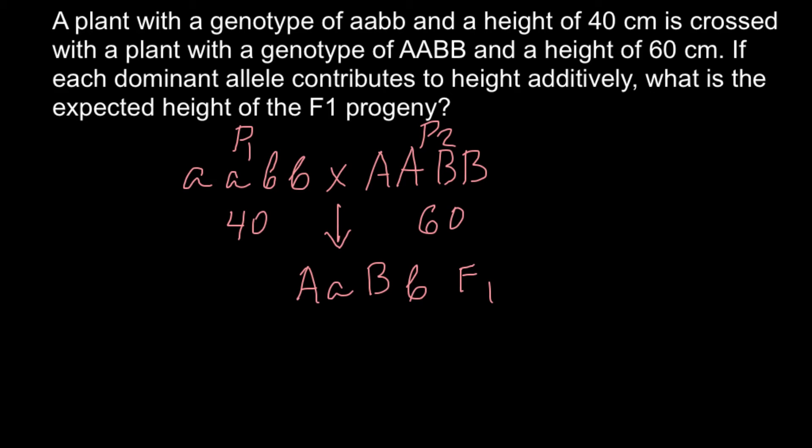Now it's very easy to calculate how much each allele, whether it is dominant or recessive, adds to that trait. For example, parent 1 has 4 alleles and height is 40 cm, so we can say that each allele would add 10 cm. We just divide 40 cm by 4 alleles and we get 10 cm per one recessive allele.